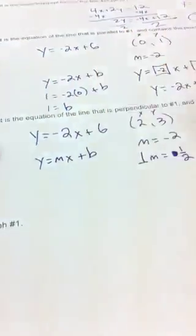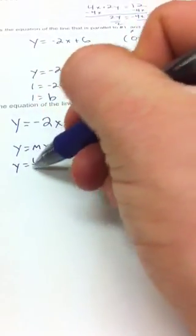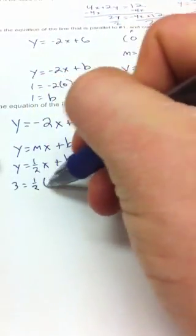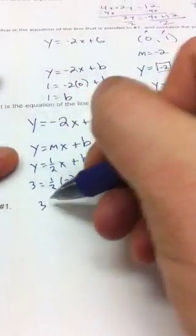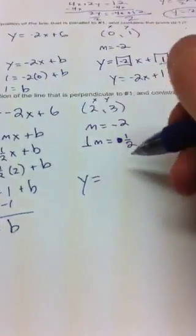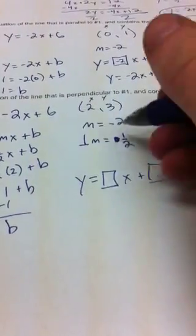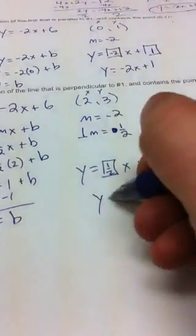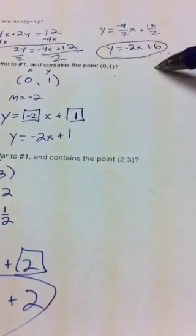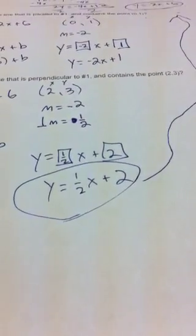So the slope we'll use is 1 half. I write y equals 1 half x plus b, then sub in 2 and 3 for x and y: 3 equals 1 half times 2 plus b, so 3 equals 1 plus b, giving b equals 2. Building the equation: y equals 1 half x plus 2. This line is perpendicular to number 1 and also contains the point 2, 3.